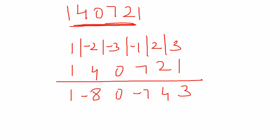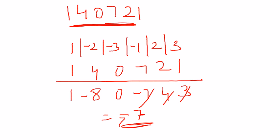Adding them up: 4 + 3 = 7, which cancels out with -7, and 1 - 8 gives -7. So the result is -7. The trick is: if the output is any multiple of 7, we discard the sign and look at the absolute value. Since 7 is a multiple of 7, the number 140721 is exactly divisible by 7.